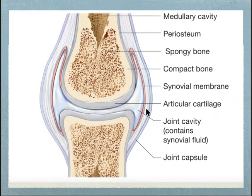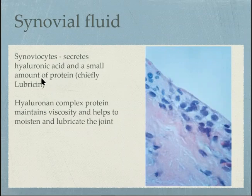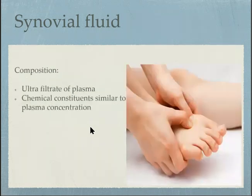Let's focus on the synovial membrane. The synovial membrane is composed primarily of synoviocytes, which are the cells that secrete hyaluronic acid. The hyaluronic acid and a small amount of protein — chiefly your lubricant — form the hyaluronine complex, which maintains the viscosity of the joint fluid and helps to moisten and lubricate the joint. Since the synovial fluid is an ultrafiltrate of plasma, its chemical composition is quite similar to plasma concentration.